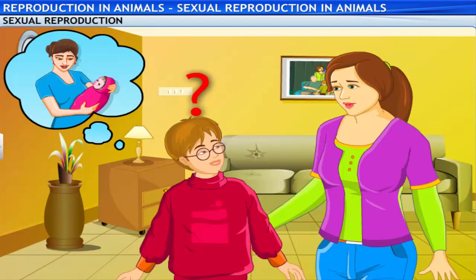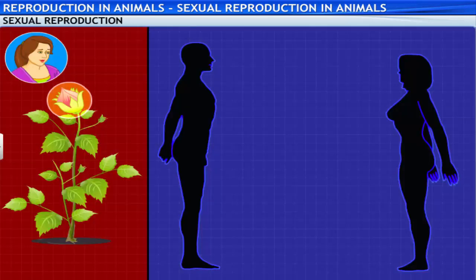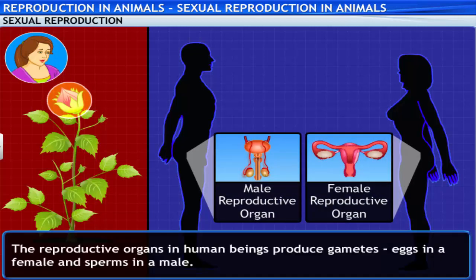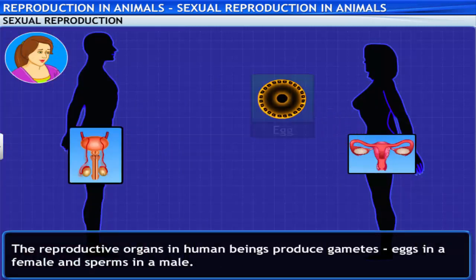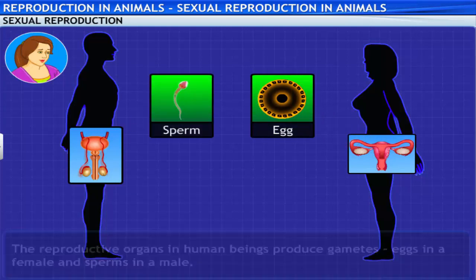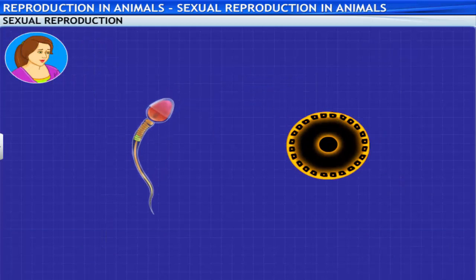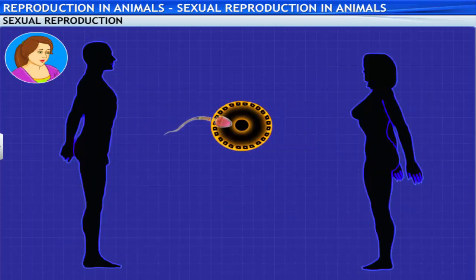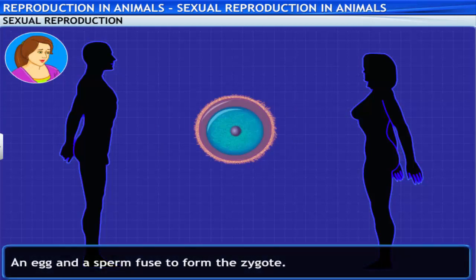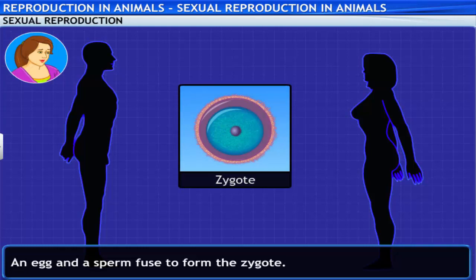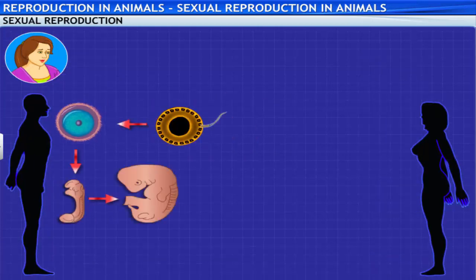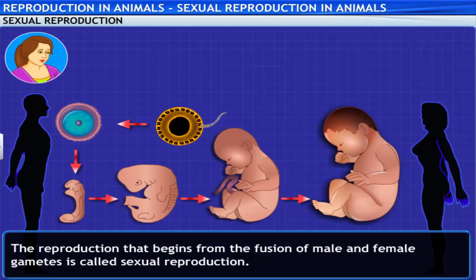So, babies are always born by sexual mode of reproduction? Right. Like plants, animals and human beings also have reproductive organs. The reproductive organs in human beings produce gametes — eggs in a female and sperms in a male. Think of these eggs and sperms as supercells that are responsible for starting the reproduction process when they fuse. When an egg and a sperm fuse, another more powerful cell is created. This cell is known as a zygote. This type of reproduction that begins from the fusion of male and female gametes is called sexual reproduction.